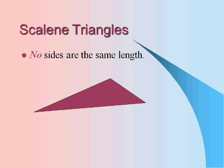Scalene triangles have no sides that are the same length. So all would be marked as not equal.